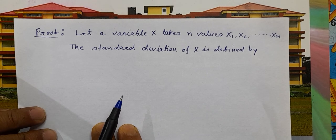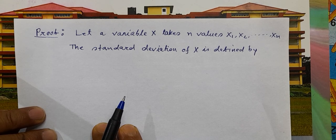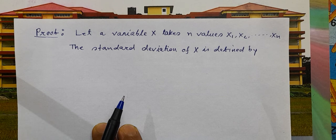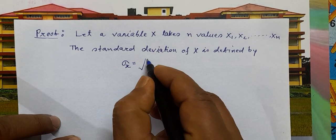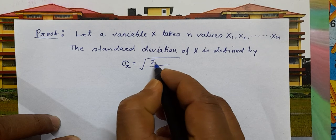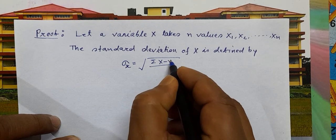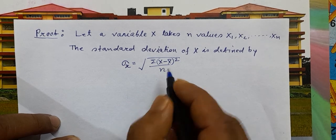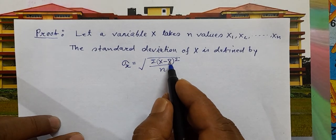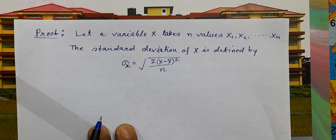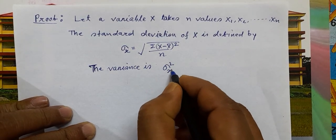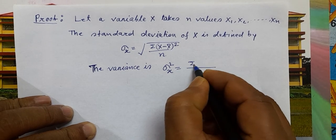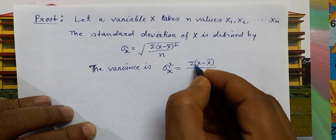Let a variable x take n values x1, x2, ... xn. The standard deviation of x is defined as sigma x, the square root of summation of (x minus x-bar) squared by n, where x-bar is the mean of x and n is the number of observations. Therefore, the variance equals summation of (x minus x-bar) squared by n.